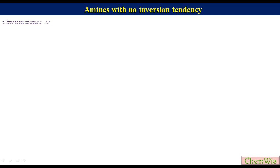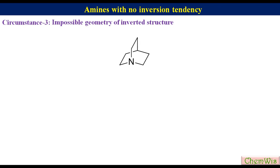Circumstance 3: Impossible geometry of the inverted structure. Nitrogen inversion is retarded in cage-like compounds — for example, quinuclidine — where the nitrogen atom is in a six-membered ring but cannot invert due to the impossible geometry of the inverted structure.